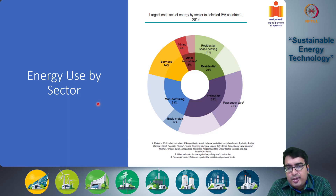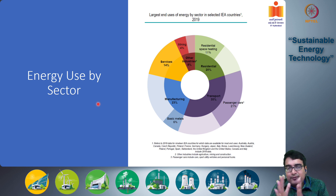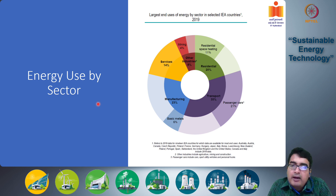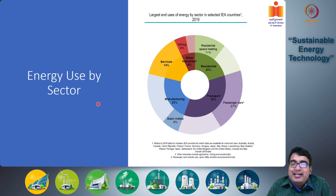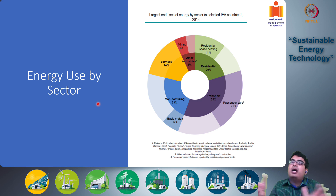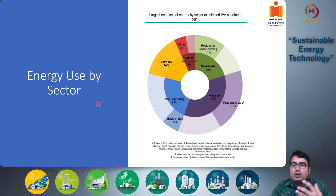We also want to look at the energy use by sector. This is 2019 data from a set of countries including mostly developed countries, so these kinds of data are not always available everywhere. There is Indian data of course, but we have to look into it in a little more detail in tables. What is being seen here is: you are getting this energy by whatever means — which sectors are using that energy? So if you're getting 100 joules, how is that distributed among the various sectors?